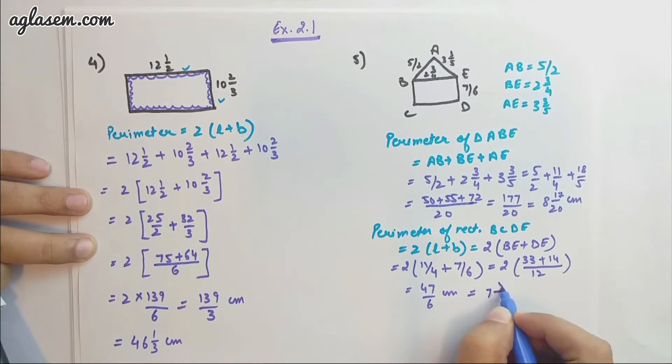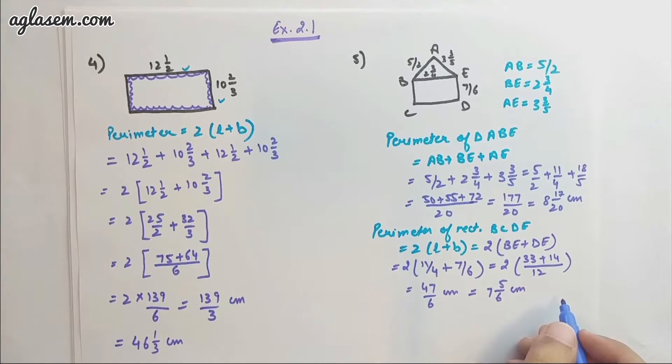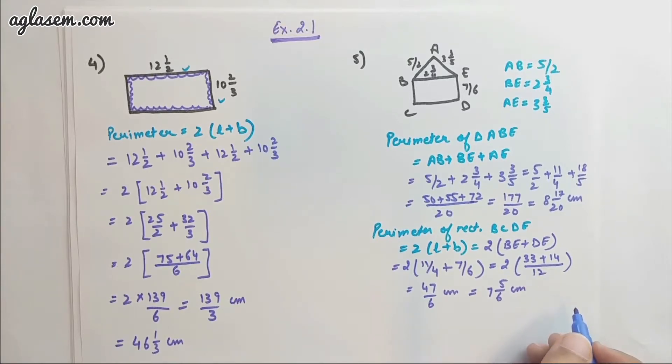That gives us 47/6 as the perimeter, or if we convert it into a mixed fraction, 7 5/6 centimeter.